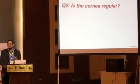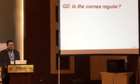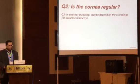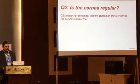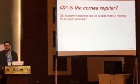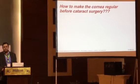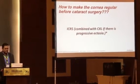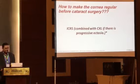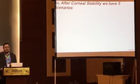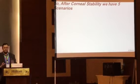The second question, after having a stable cornea, is: is the cornea regular or irregular? Which means, can we depend on the keratometry readings for accurate biometry or not? How to make the cornea regular before cataract surgery? Intracorneal ring segments combined with cross-linking, if there is progressive ectasia, has been proved to result in a stable and regular cornea.